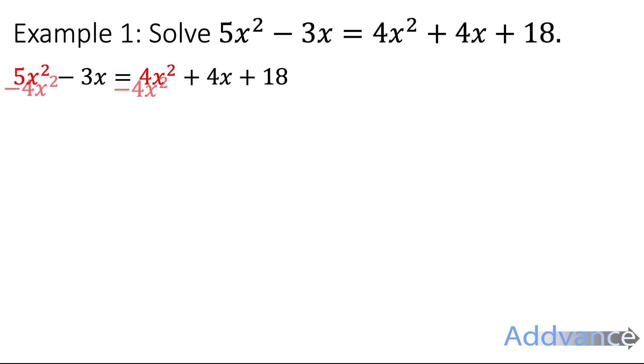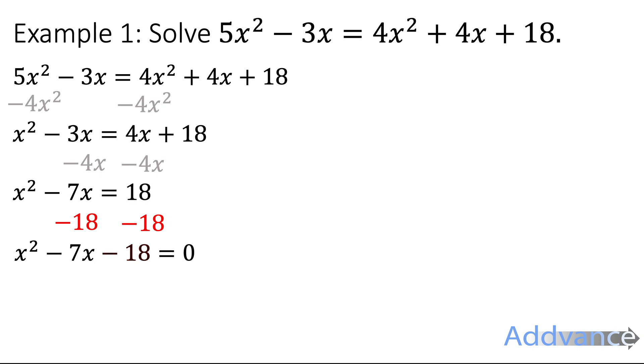We'll start by subtracting 4x² from both sides and when we do that we will get 5x² - 4x² which is just x². Now we subtract 4x from both sides and we'll get -7x on the left side and then finally subtract 18 from both sides to get x² - 7x - 18 = 0.